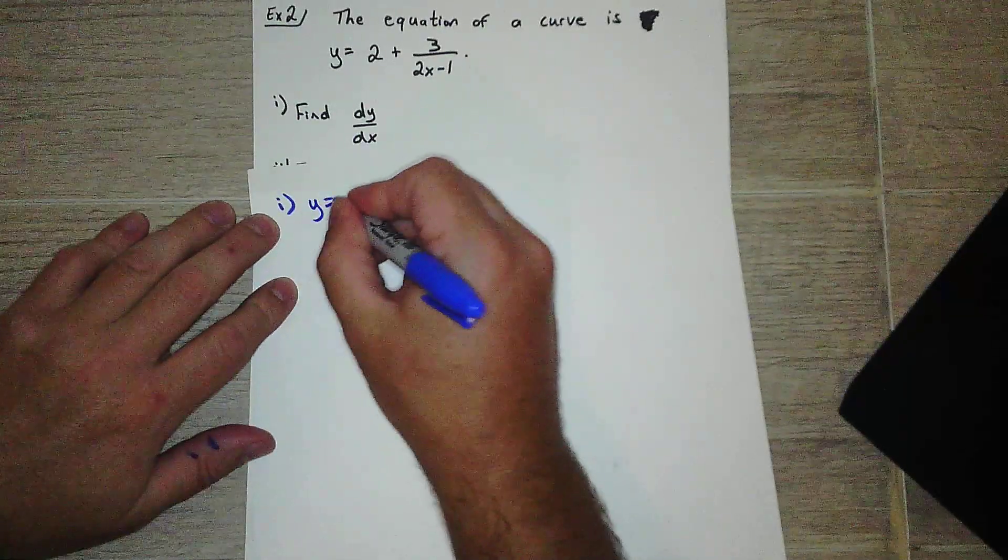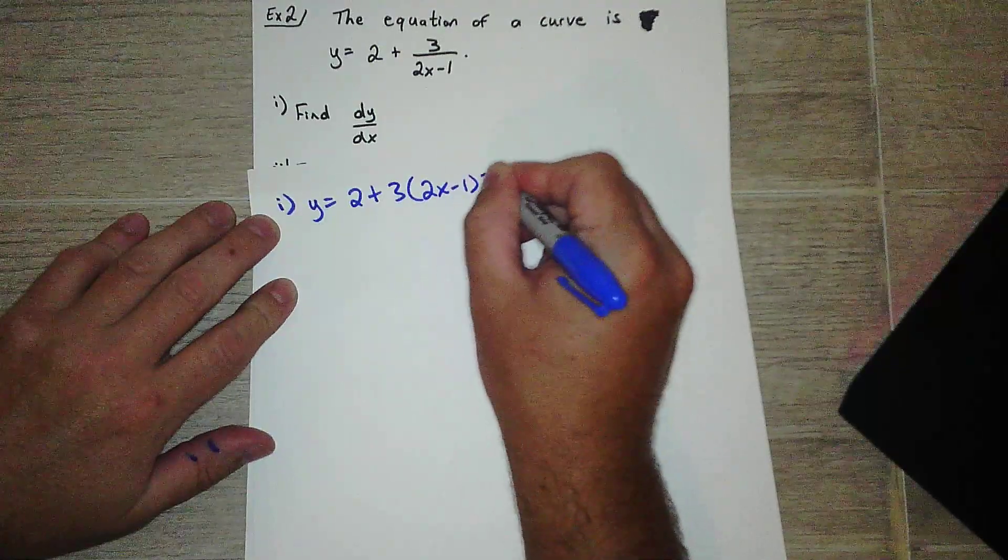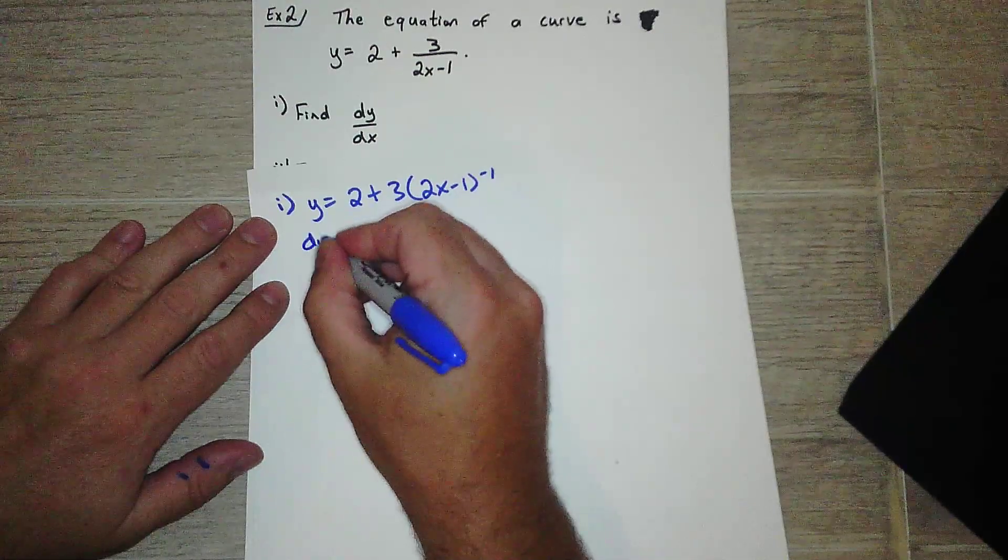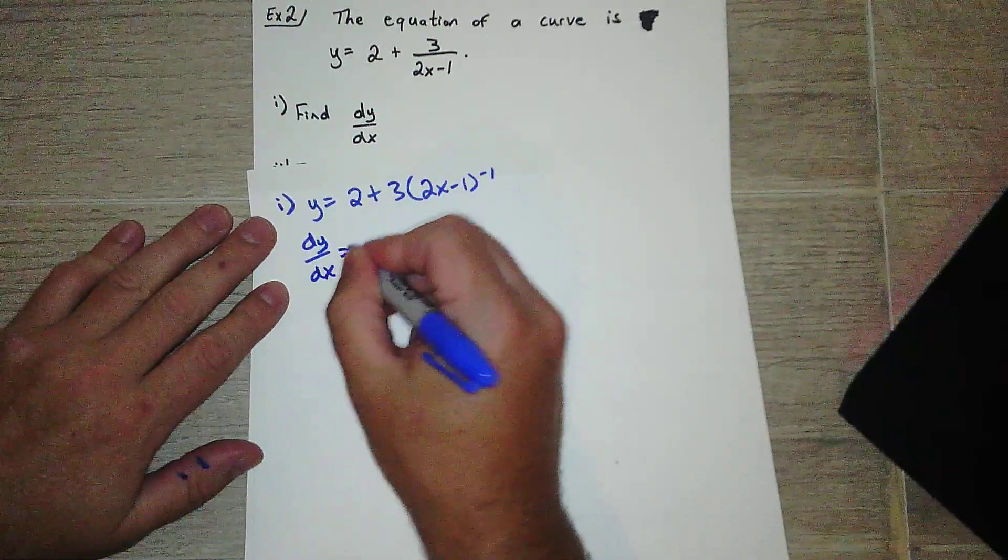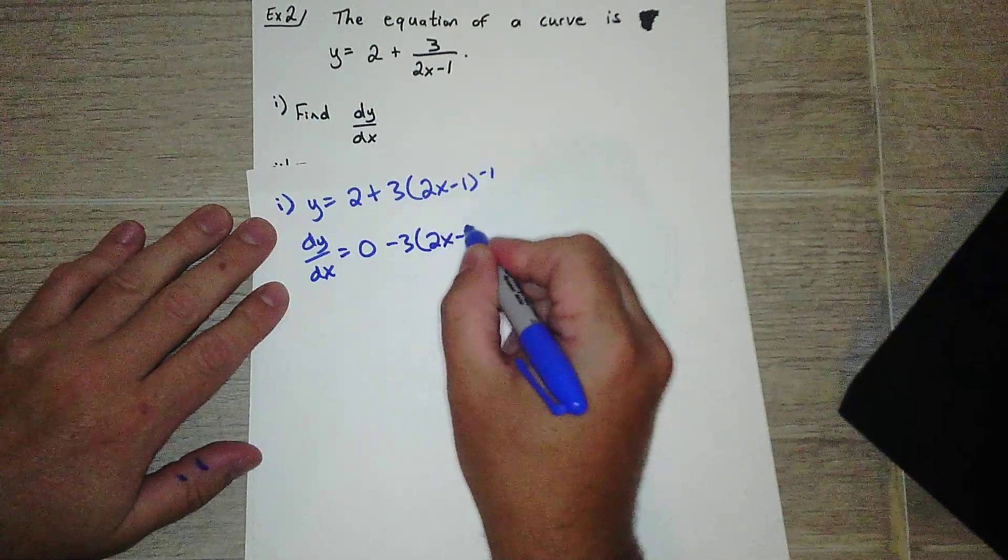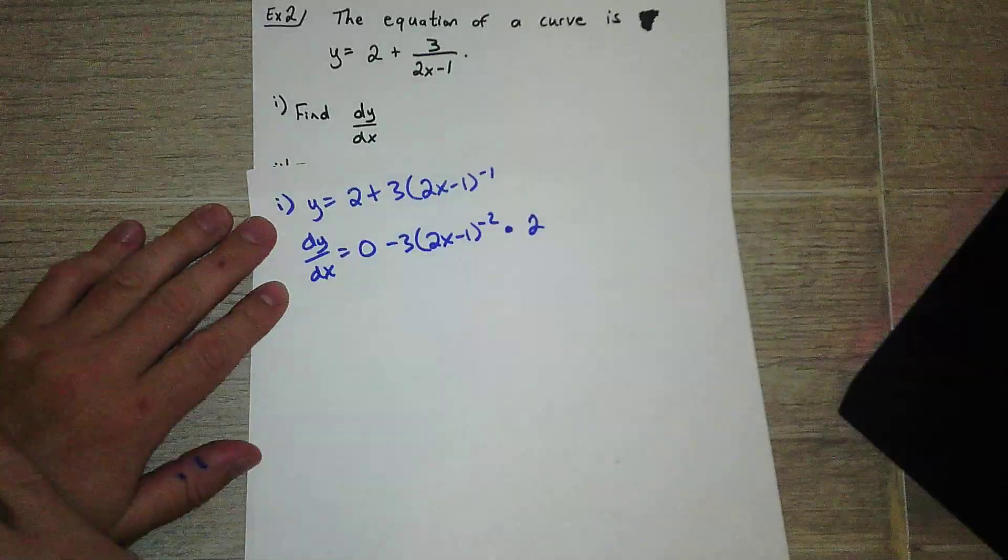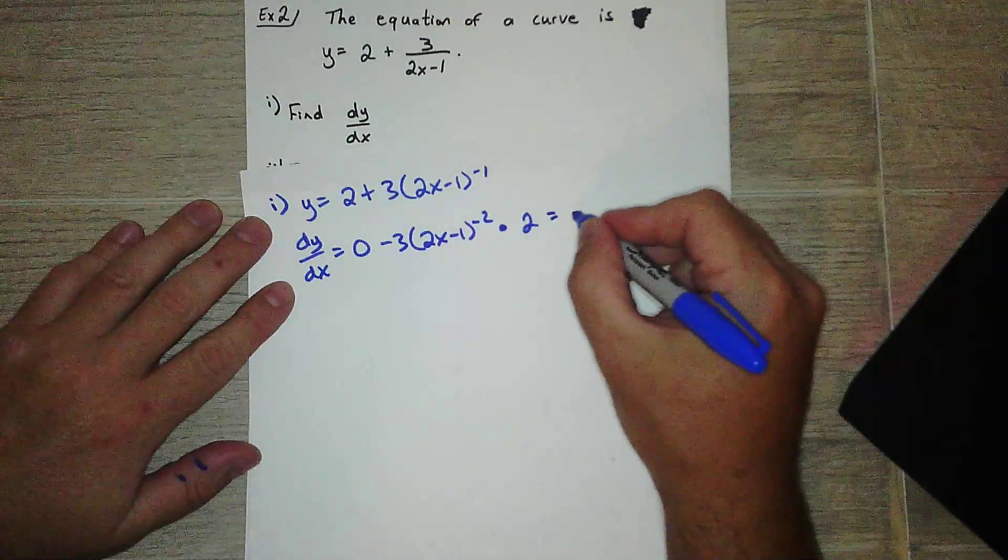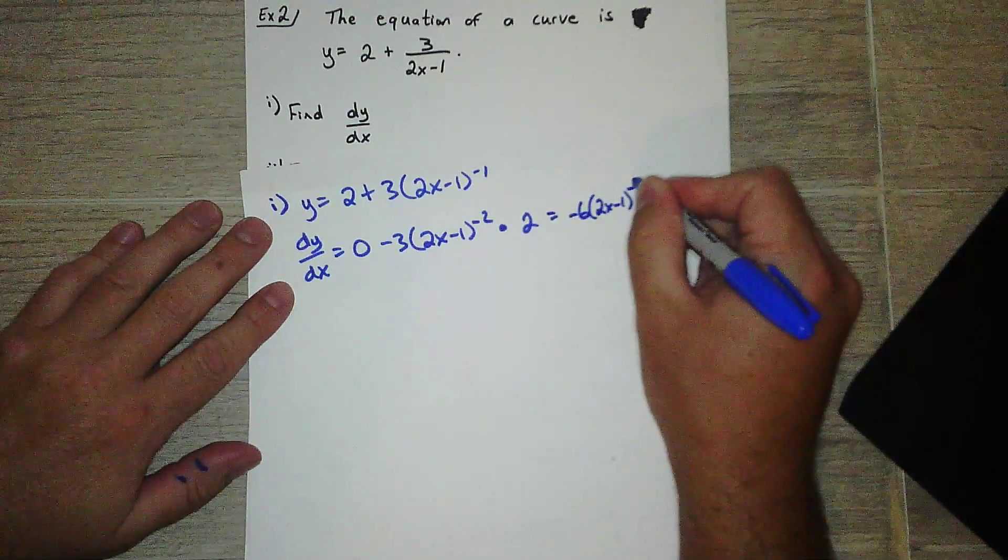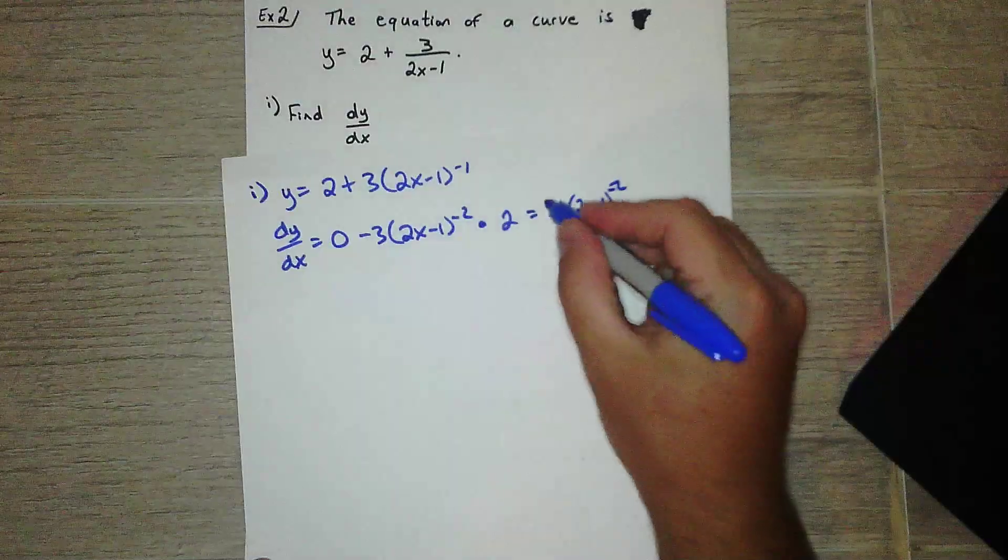Okay, so I'm first going to rewrite it. I'm going to write that whole bottom as a negative exponent, so that makes it easier to do the derivative. Derivative of 2 is zero. Bring down the negative one. Leave what's in parentheses alone, subtract one, and then multiply it by the derivative of the inside. So then dy/dx is negative 6 times (2x-1) to the negative two. So there's my dy/dx.